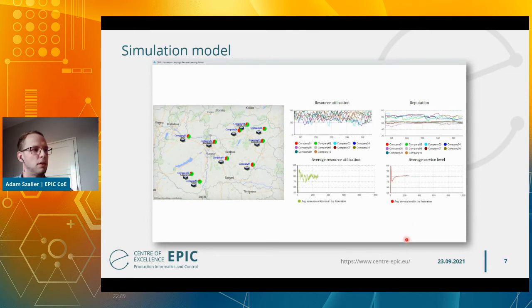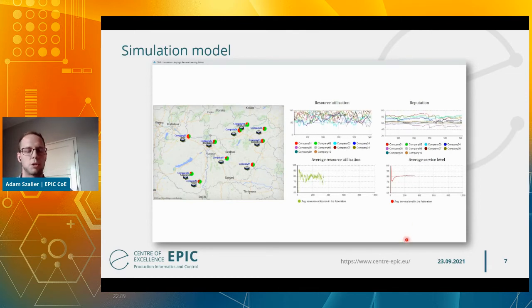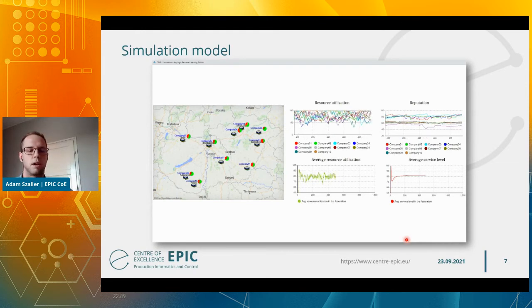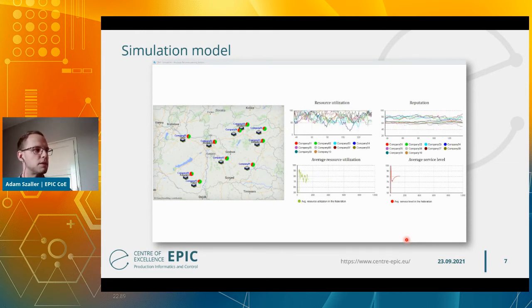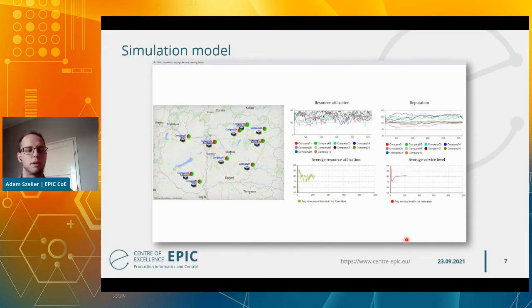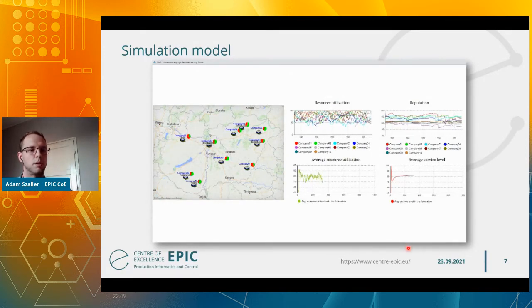In the AnyLogic model, the platform and companies were modeled with agents. Of these, 40 percent of the agents were reliable and 60 percent were non-reliable — I will explain this in detail on the next slide. In the model, the frequency of the incoming order stream, the number of companies, and essentially all factors are parameters that we can experiment with.